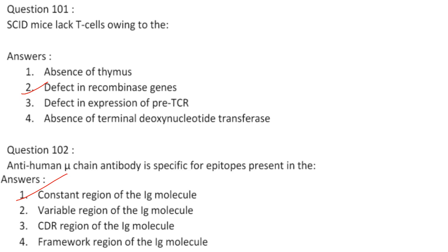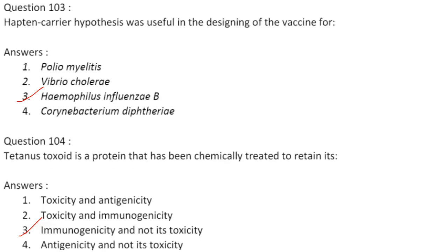Anti-human mu chain antibody is specific for epitopes present in the constant region of the IgM molecule. The polypeptide sequences responsible for the mu chain are found in the constant region. Answer is option 3. The hapten carrier hypothesis was useful in designing the vaccine for Haemophilus influenzae B. Answer is option 3.